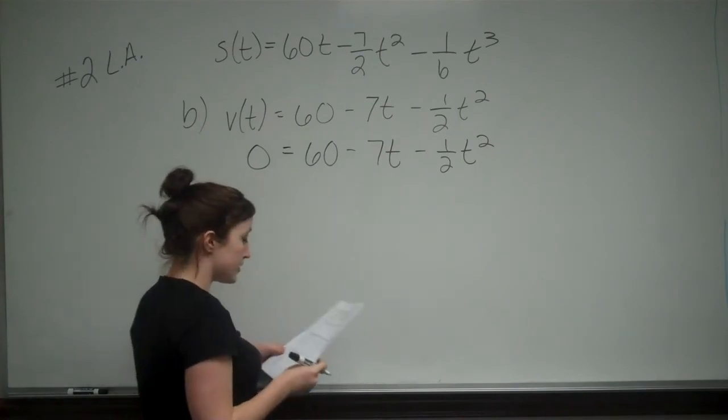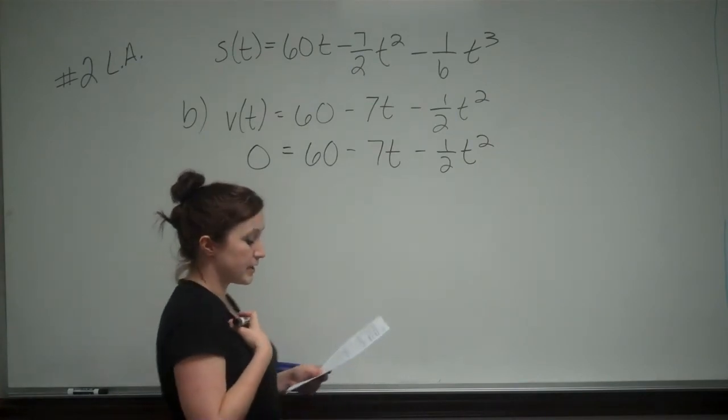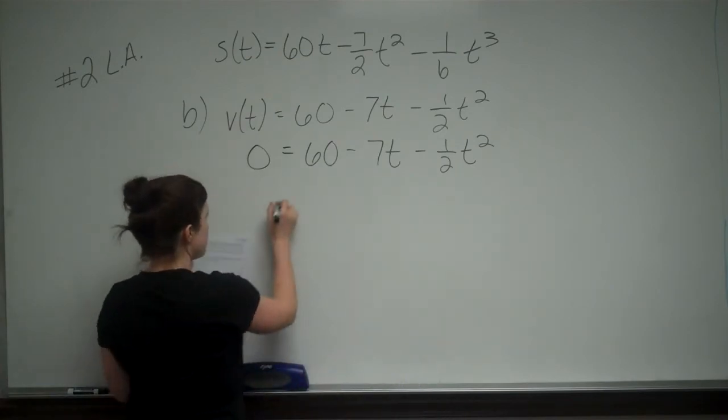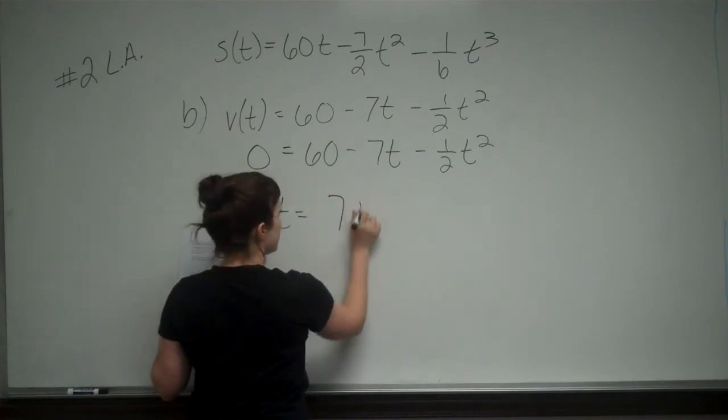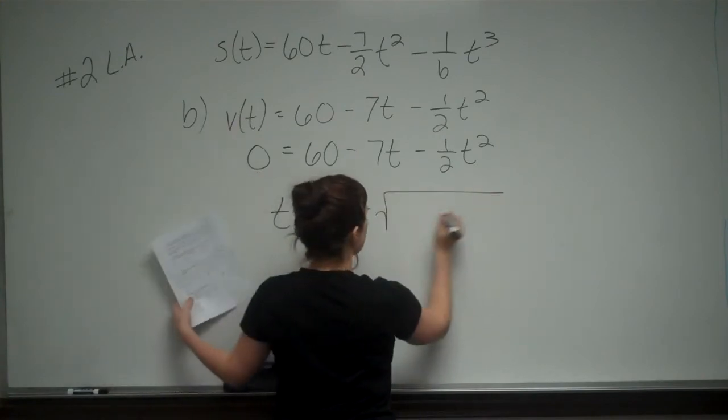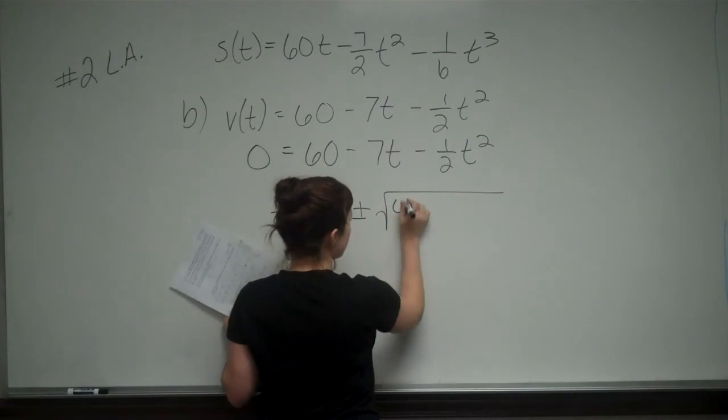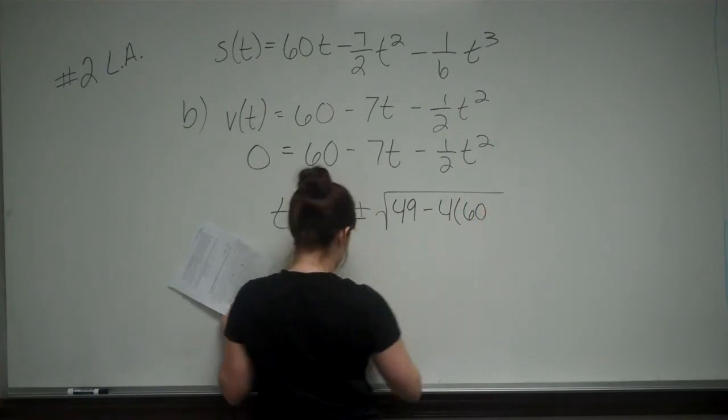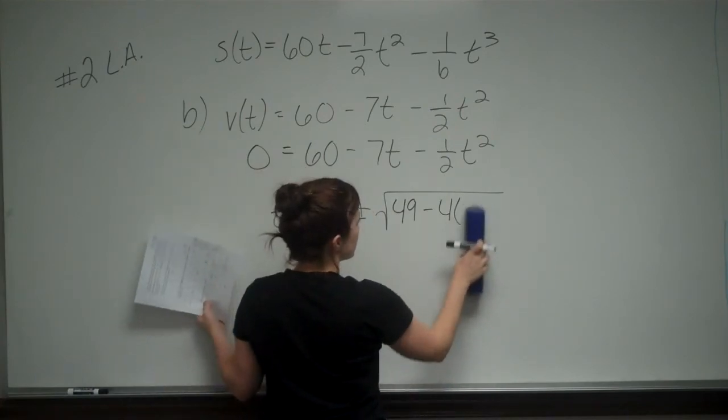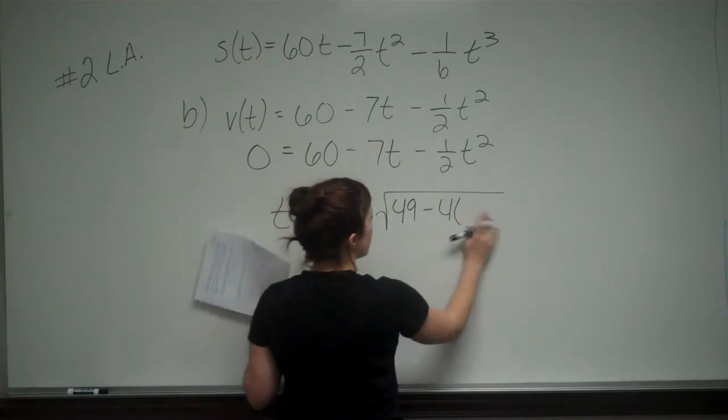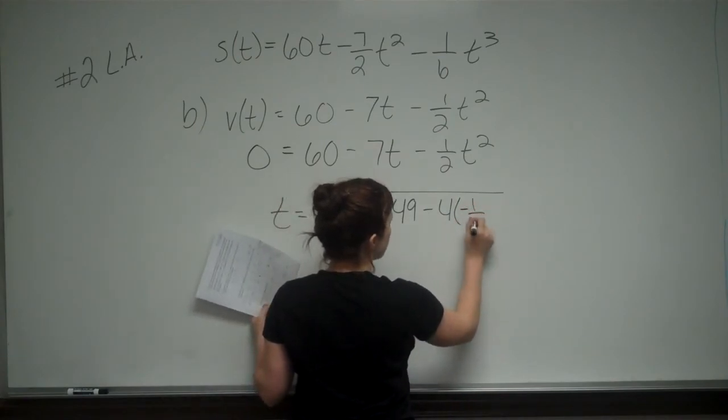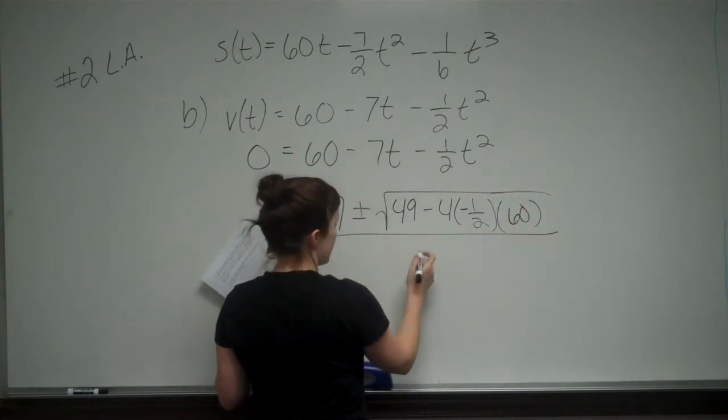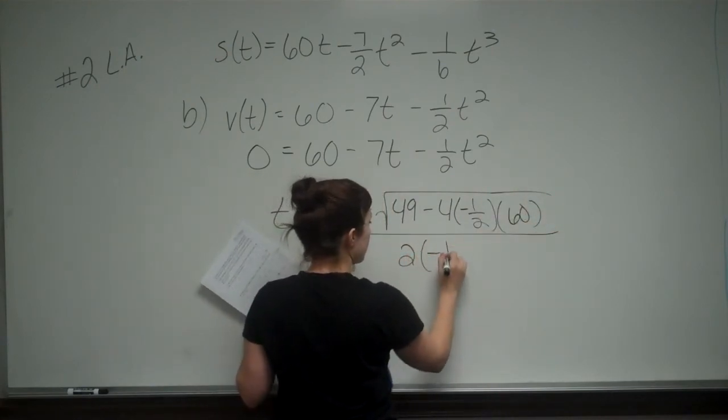All right, and then we're going to solve. I solved by using the quadratic formula, because I didn't really want to factor this. So I said that T is equal to 7 plus or minus the square root of B squared, which is 7 squared, which is 49, minus 4 times A times C, all over 2 times A. So 2 times negative 1 half.